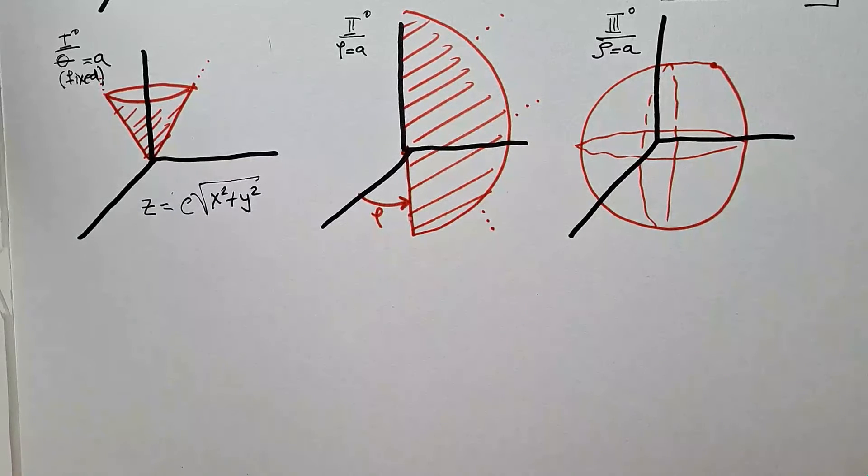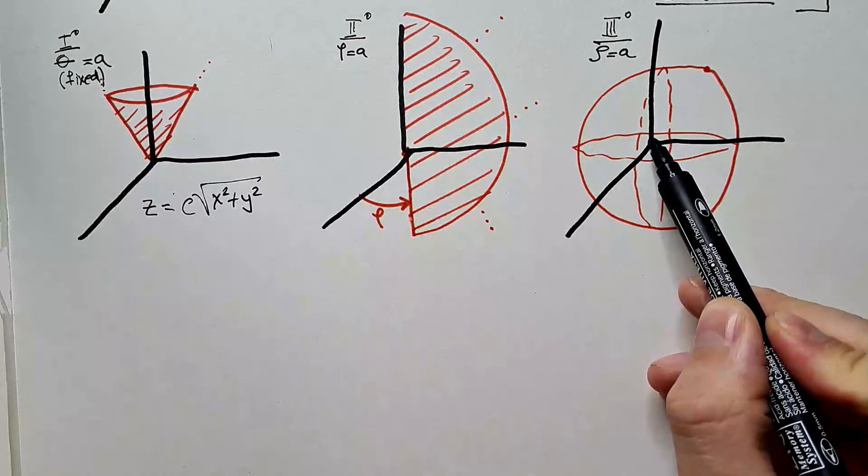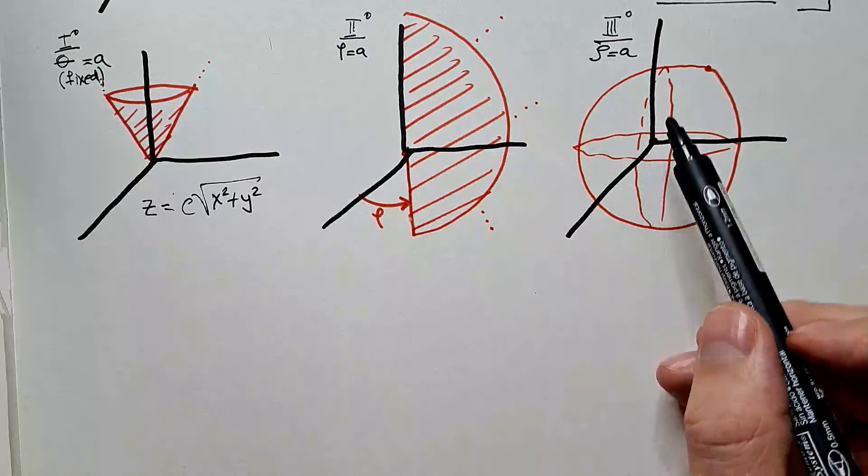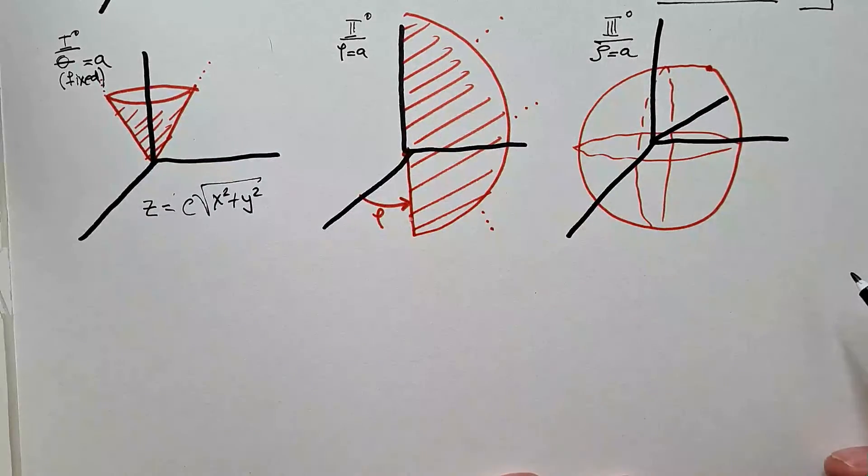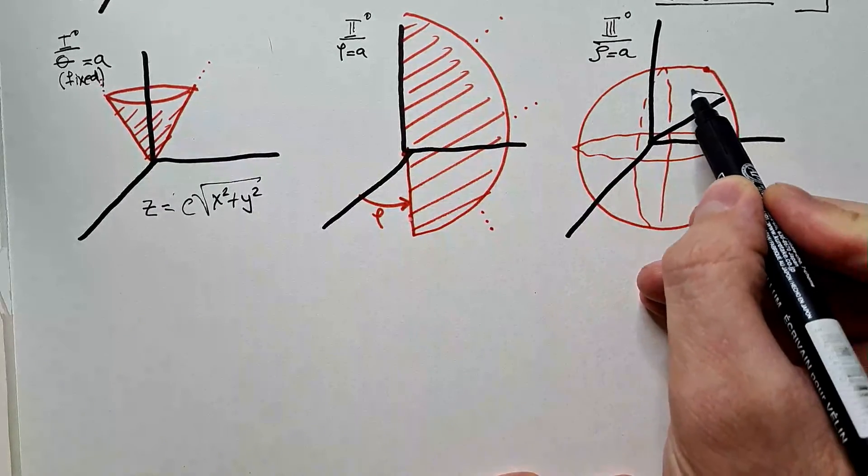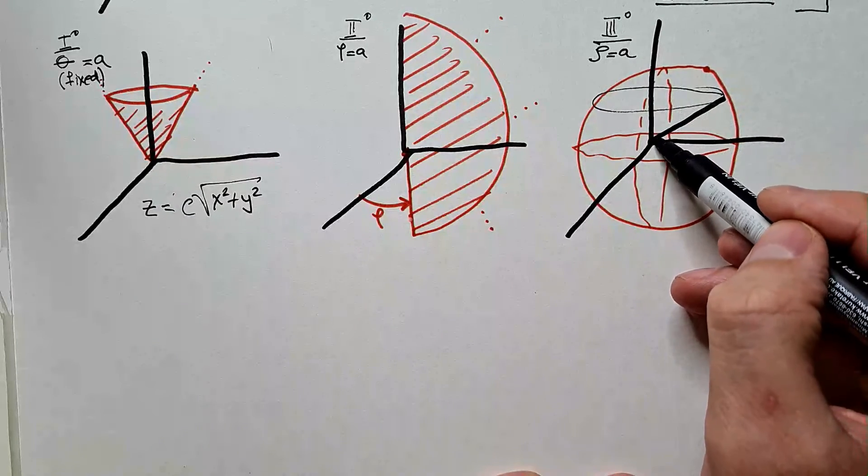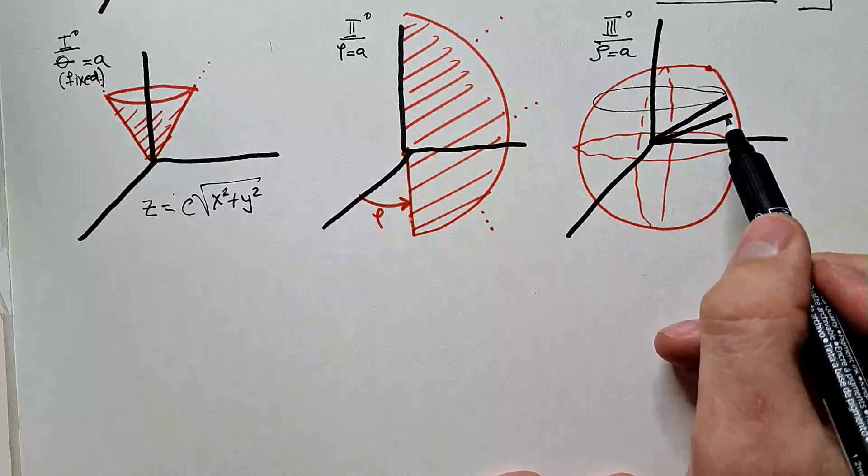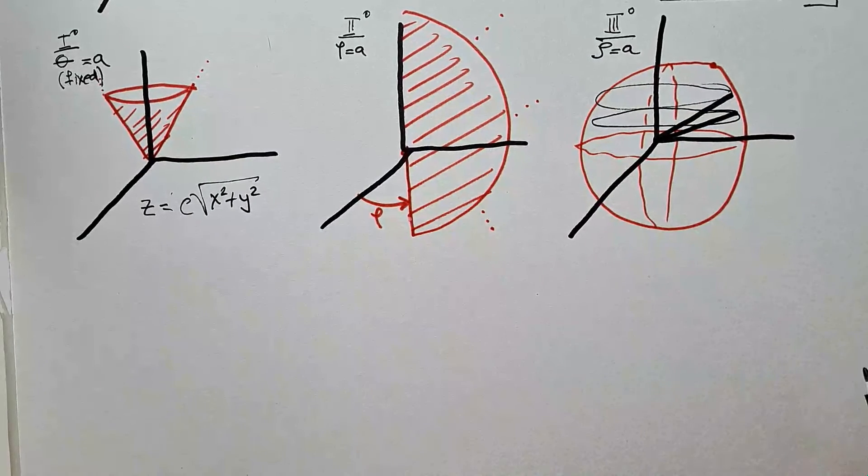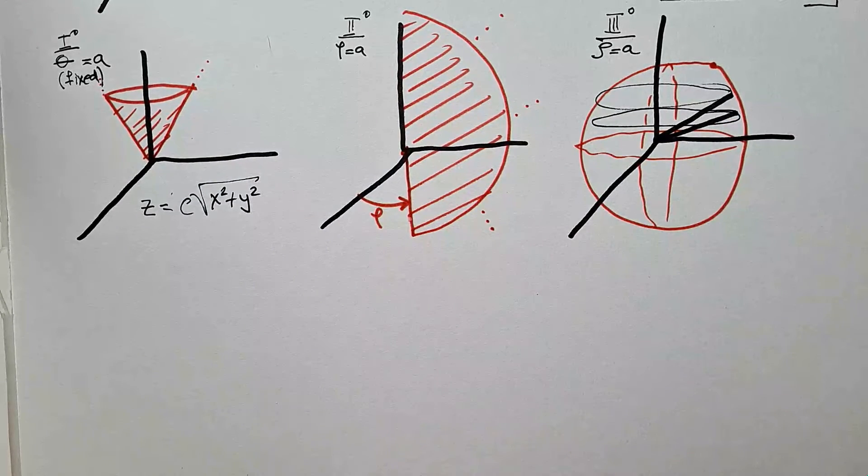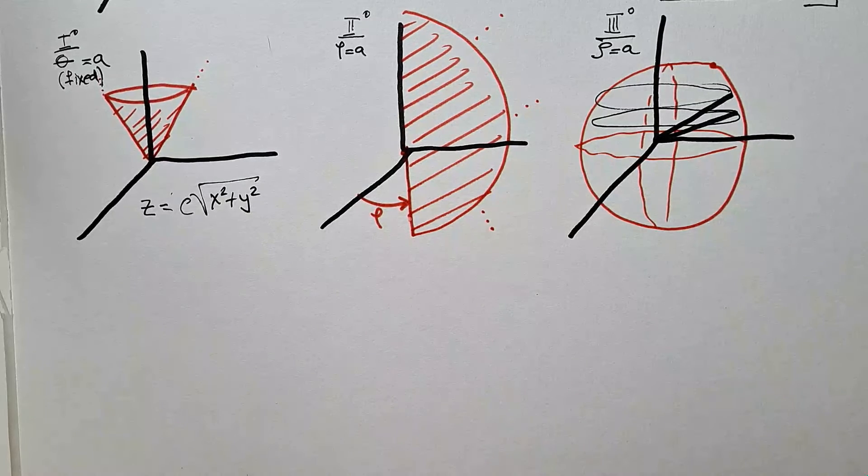In atmospheric sciences, this coordinate system is used in radar meteorology. Imagine that this over here is the position of our radar. Radar shoots a beam at certain elevation, like so, and then it scans 360 degrees. Then it changes the elevation, and then again it scans 360 degrees. And you can see how this is much easier to represent in spherical coordinate system than it would be in Cartesian coordinate system.